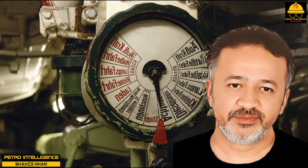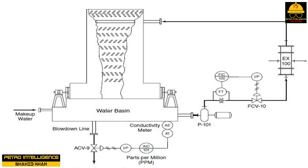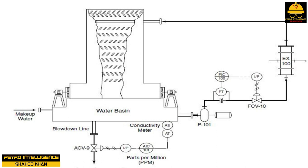An analytical control loop is used to control process variables such as pH, PPM, and product concentrations. Cooling towers require close control of pH and parts per million (PPM); shifts in these variables can cause serious problems. Control systems can be used to control these analytical variables.